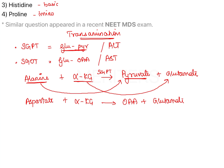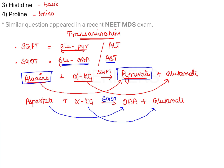In this reaction, aspartate becomes oxaloacetate and alpha-ketoglutarate gets converted into glutamate. This is catalyzed by SGOT — Glutamate Oxaloacetate Transaminase, also known as Aspartate Transaminase. These two are the most important transaminase reactions; the one catalyzed by SGPT or ALT confirms that alanine gets converted into pyruvate.